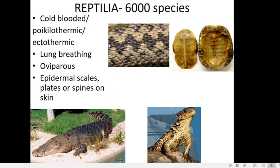Reptilia is the first class in Vertebrata to have evolved a completely terrestrial life. Previous classes like Amphibia and Pisces depend upon water — some are purely aquatic, and amphibians require a water body for fertilization and development. But reptiles are the first organisms to attempt a completely terrestrial life without any need for water to complete their life cycle.